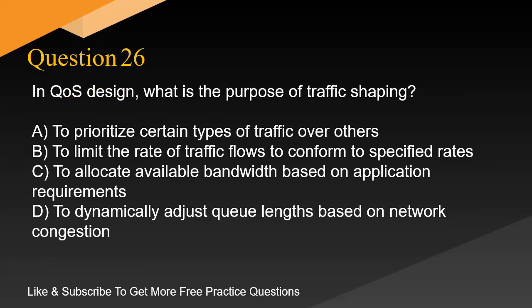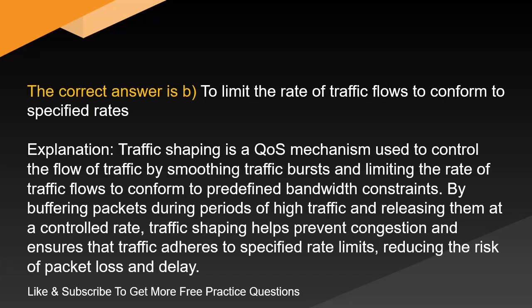Question 26. In QoS design, what is the purpose of traffic shaping? A. To prioritize certain types of traffic over others. B. To limit the rate of traffic flows to conform to specified rates. C. To allocate available bandwidth based on application requirements. D. To dynamically adjust queue lengths based on network congestion. The correct answer is B: to limit the rate of traffic flows to conform to specified rates. Traffic shaping is a QoS mechanism used to control the flow of traffic by smoothing traffic bursts and limiting the rate of traffic flows to conform to predefined bandwidth constraints. By buffering packets during periods of high traffic and releasing them at a controlled rate, traffic shaping helps prevent congestion and ensures that traffic adheres to specified rate limits, reducing the risk of packet loss and delay.